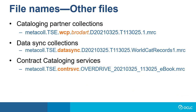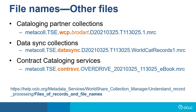If your library receives WorldCat records for other types of collections or services, then you will see some file names as follows. Files for cataloging partner collections will have WCP to denote the collection type as well as the name of the provider. Files of records from data sync collections will contain data sync. If your library uses contract cataloging services, the file names will identify this type of record.